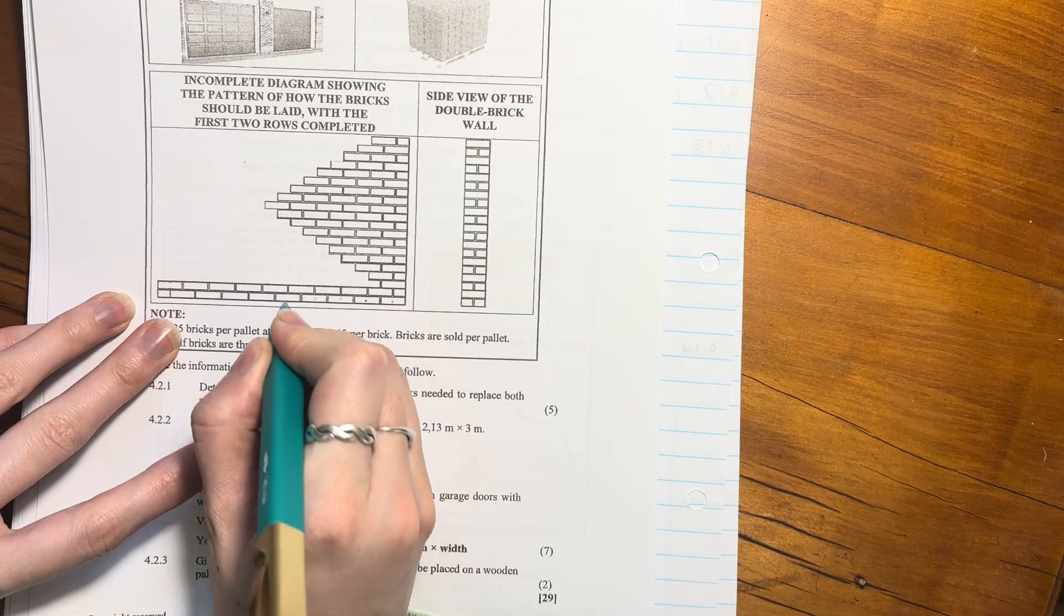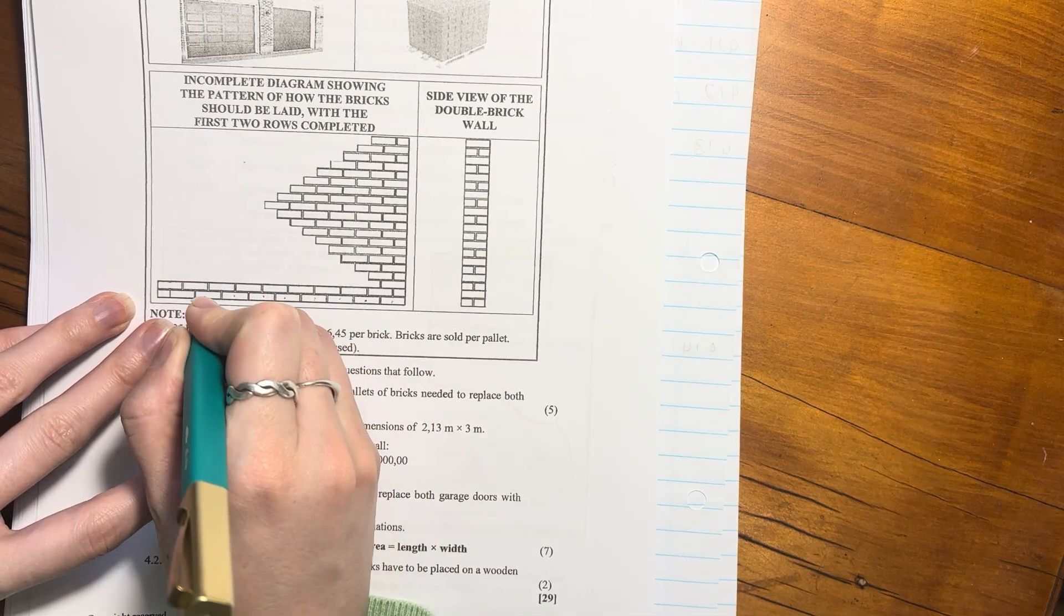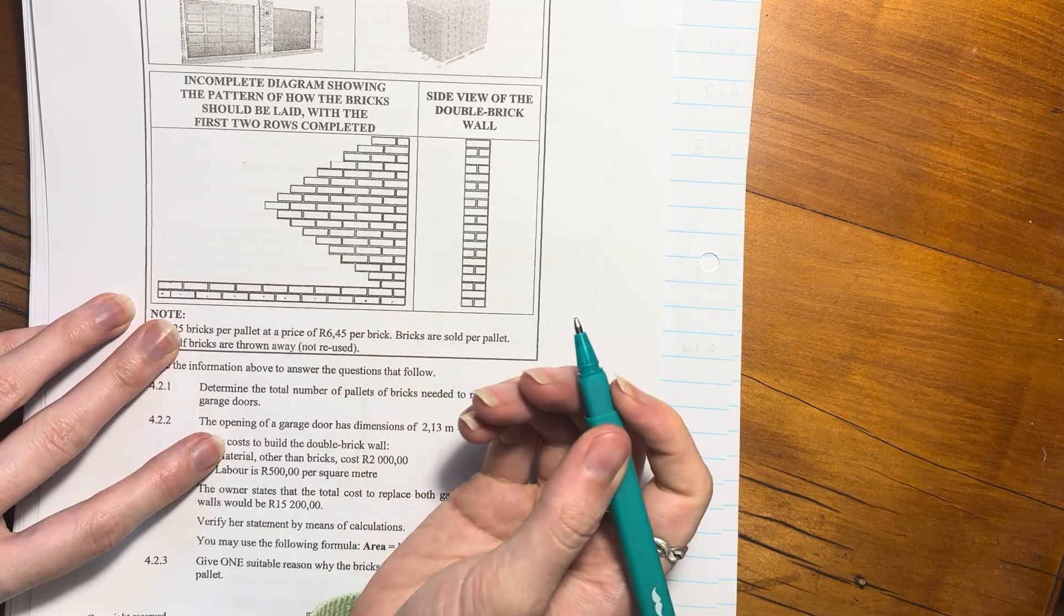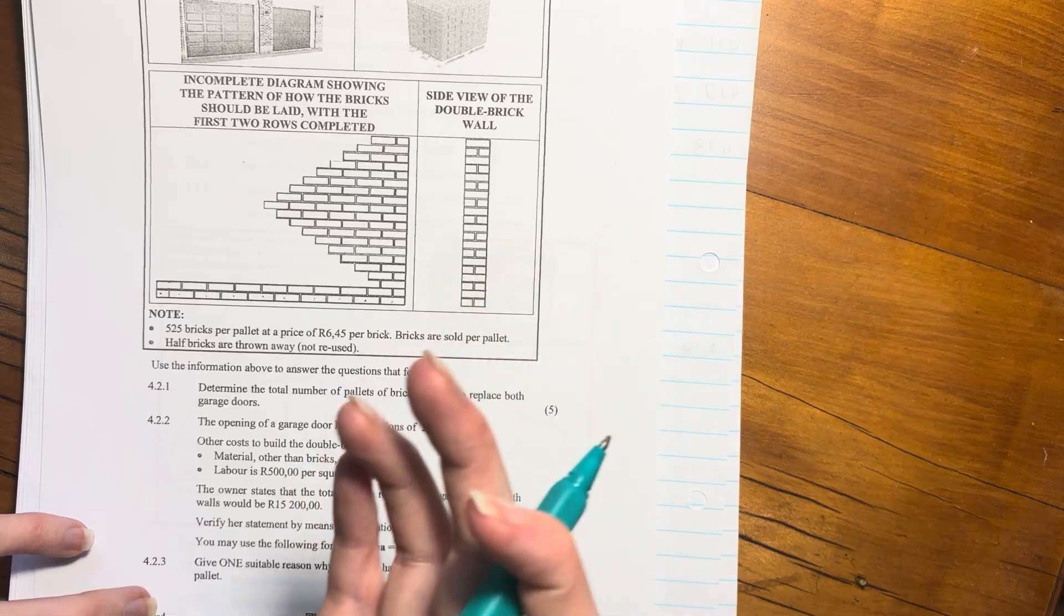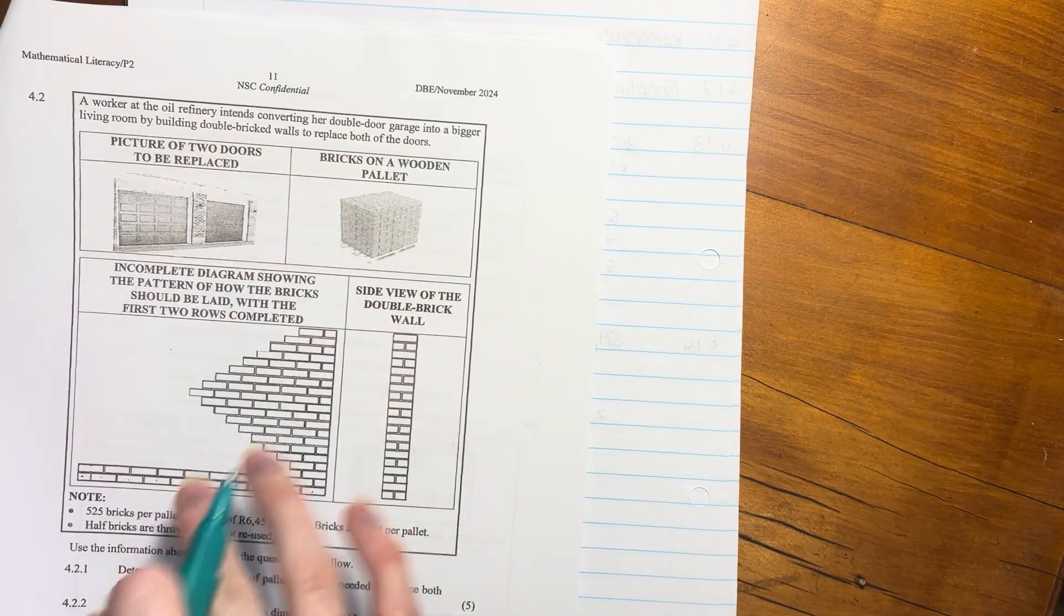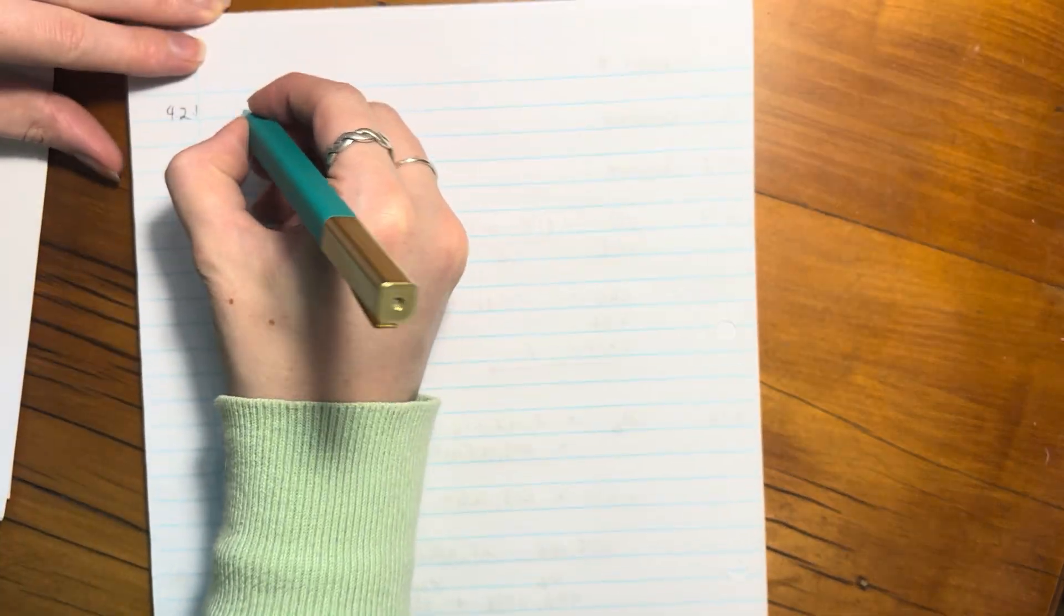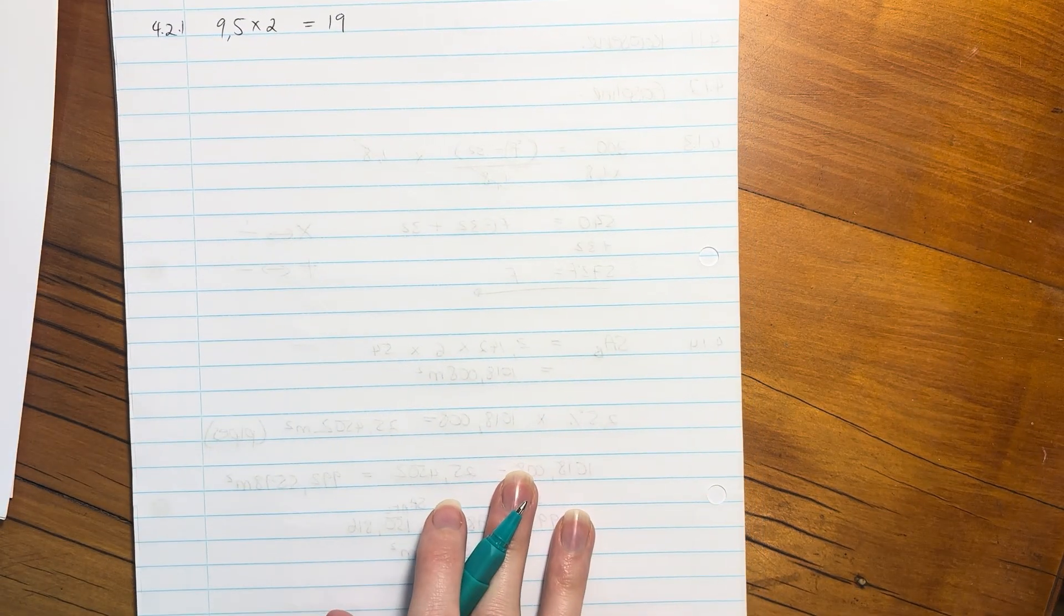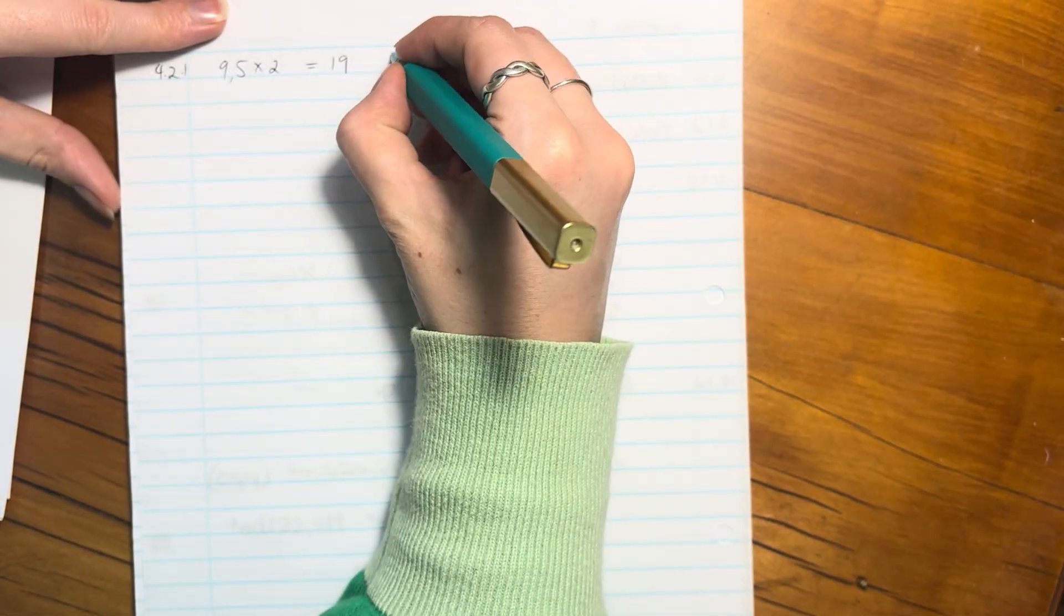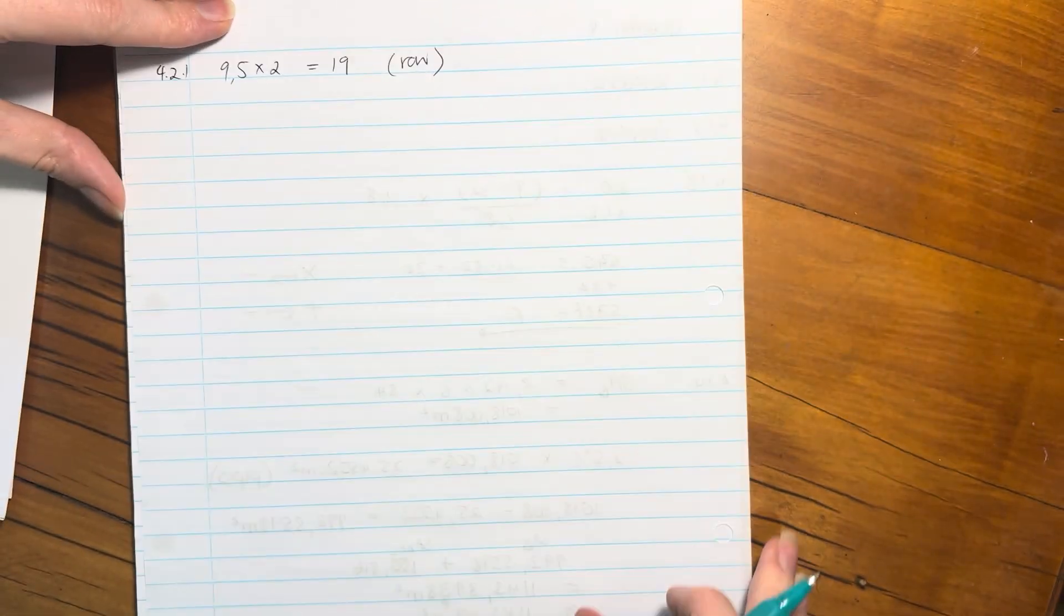At the bottom of the wall we have one, two, three, four, five, six, seven, eight, nine, nine and a half. But they told us it was going to be a double wall, do you remember double bricked? So each row is going to have 9.5 times 2 because it's double bricked.